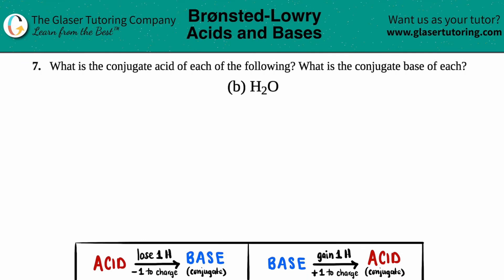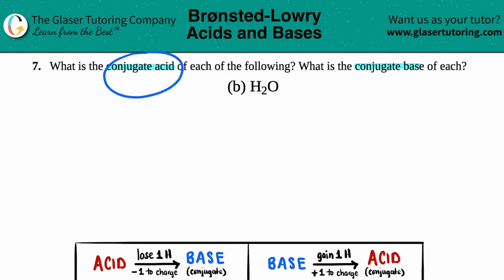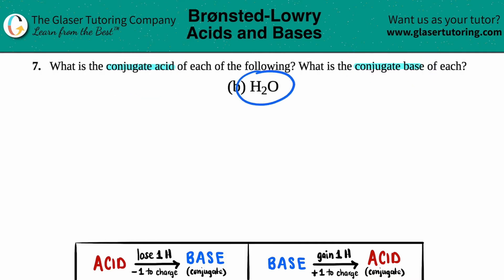Number seven: what is the conjugate acid of each of the following, and then what is the conjugate base of each? For letter B, we have to find both the conjugate acid and the conjugate base of H2O.